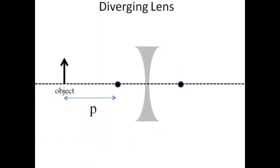A real object, shown to the left of the diverging lens, will form a virtual image also on the left side of the lens.